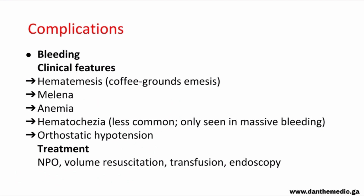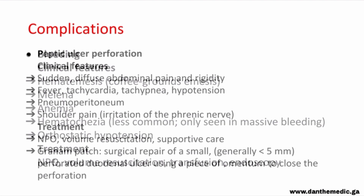Complications of peptic ulcer disease include bleeding, which is the most common complication. It can be a chronic slow bleed or an overt rapid life-threatening hemorrhage. The most likely sources include posterior duodenal ulcers (bleeding from the gastroduodenal artery) and lesser curvature ulcers (bleeding from the left gastric artery). Clinical features include hematemesis, melena, anemia, hematochezia (only in massive bleeding), and orthostatic hypotension. Treatment includes NPO, volume resuscitation, transfusion, and endoscopy.